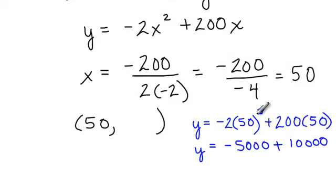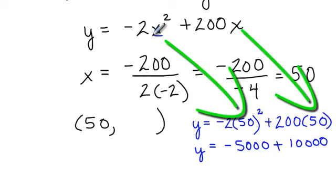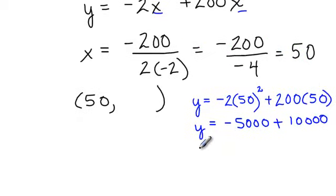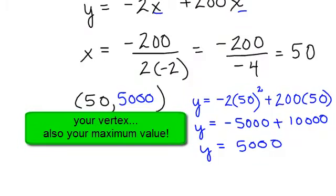So I will plug 50 in for my x. 50 squared times negative 2 is negative 5,000. 200 times 50 is 10,000. So my y, negative 5,000 plus 10,000, is a positive 5,000. So in the math world, my vertex is 50, 5,000.